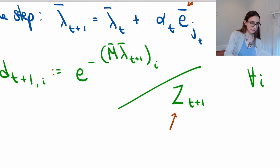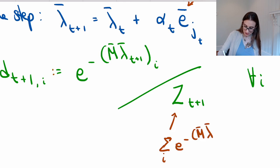I update it by just using its definition, and then I want to remind you that this z_t here, that's just the normalization factor which makes sure that everything adds up to 1. So this thing is actually the sum over i of e to the negative M lambda_t+1,i.